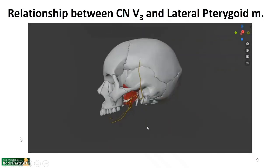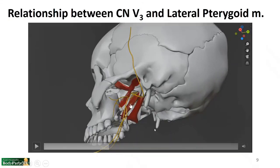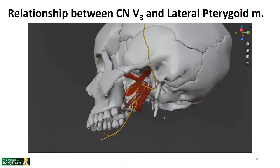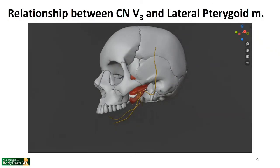Here we can see the relationship between the muscles and V3. Most laterally is the lateral pterygoid muscle, then the tensor veli palatini, and most medially the levator veli palatini. V3 exits the foramen ovale between the lateral pterygoid and tensor veli palatini, and the anterior division courses between the superior and inferior heads of the lateral pterygoid muscle on the way to their targets. This visual shows how both of those relationships occur in this small area.